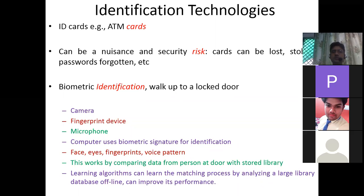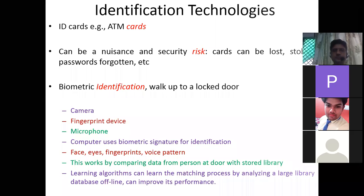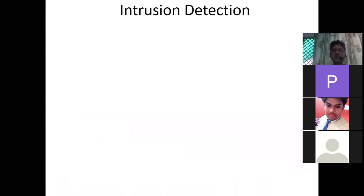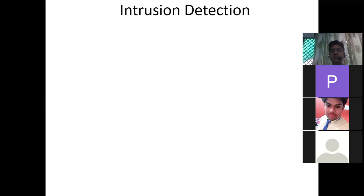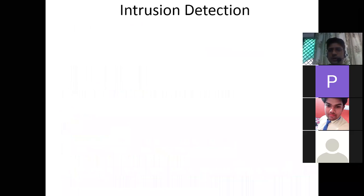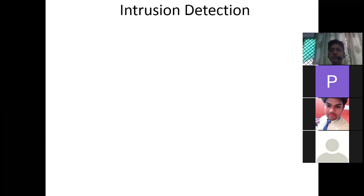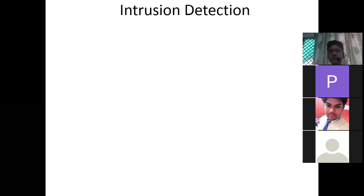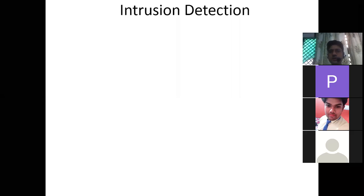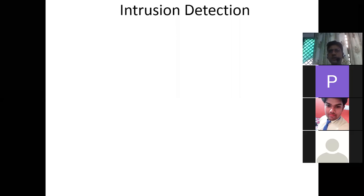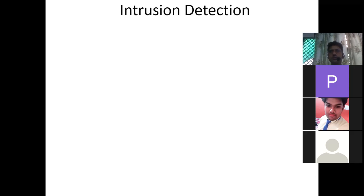The next topic is intrusion detection — finding the odd one out. There is a pattern in how you use your mobile phone, laptop, or desktop. Suppose you have Wi-Fi at home: they can predict your sleeping pattern from your usage. If you wake up at 5 a.m. and immediately start using your mobile phone, the data uploading or downloading indicates you are awake.